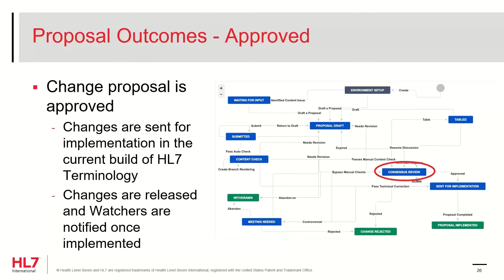Ideally, there is affirmative consensus and the change proposal is approved. This occurs once all voting requirements are met and 70 percent or more of the votes cast are affirmative. In this case, the ticket transitions to the Sent for Implementation state and the design changes are sent to the terminology curator to be implemented in the current build of the HL7 terminology. The changes are released in a short period of time, watchers are notified of the release, and the content is available in the current build as soon as the changes are released. The proposal is transitioned into the Proposal Implemented state once the changes have been made available.